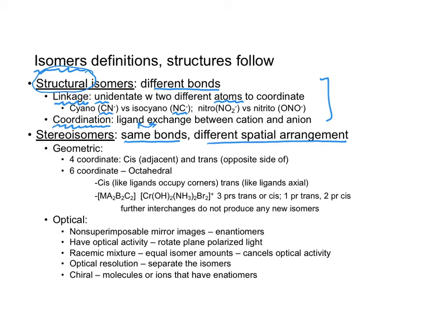The second kind of isomer is a little more complicated. It is called a stereoisomer and we have two different kinds. We have geometric and we have optical. Let's do the geometric first. Geometric is primarily cis versus trans. Cis means adjacent. Trans means opposite. It can be for a four coordinate or it can be for a six coordinate. Let's move to the slide. We say cis and trans.